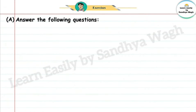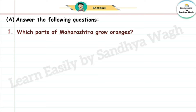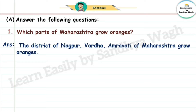Question 1: Which parts of Maharashtra grow oranges? Answer: The districts of Nagpur, Wardha, and Amravati of Maharashtra grow oranges.